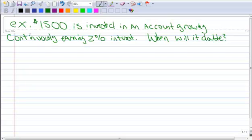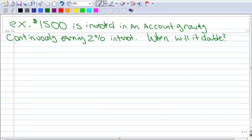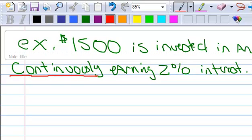In this example, we have $1,500 we're going to invest in an account and it is growing continuously, earning 2% interest. So the key word here is continuously. Whenever I see that word continuously, that means that I can use our PERT equation. So always look for that word continuously. So it earns 2% interest. When will it double?